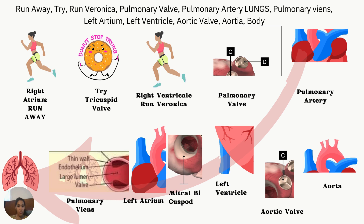Understand the different valves and what is in between them. What valve is between the right ventricle and the pulmonary artery? The pulmonary valve. What valve is between the left ventricle and the aorta? The aortic valve. What valve separates the right atrium and right ventricle? The tricuspid valve. And what valve separates the left atrium and left ventricle? The mitral or bicuspid valve.